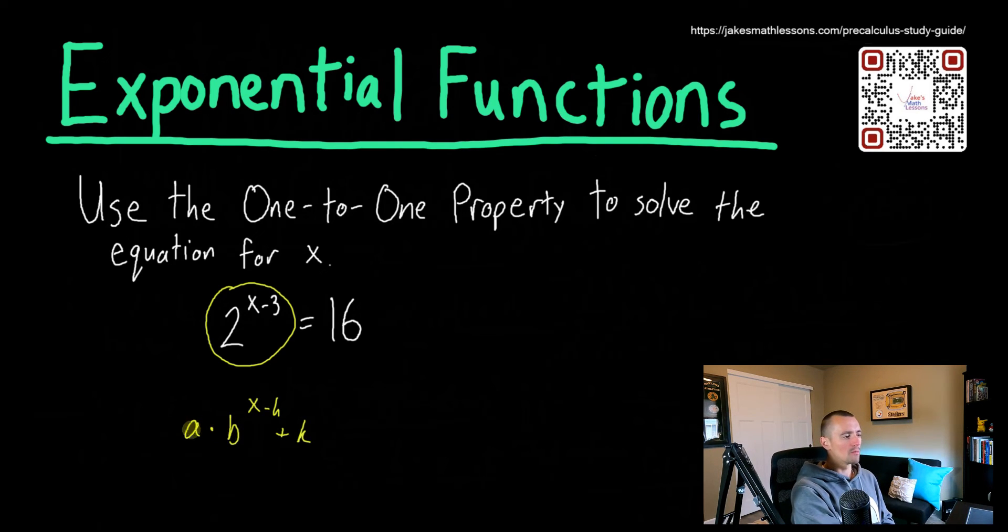The most basic version of an exponential function, though, would just be some power, something like this. Really, whenever you're trying to solve an equation like this, like if you have this example that we have right here, 2 to the x minus 3 equals 16, the best way in a lot of cases is to use the one-to-one property. So let's take a second to just kind of talk about what that one-to-one property is.